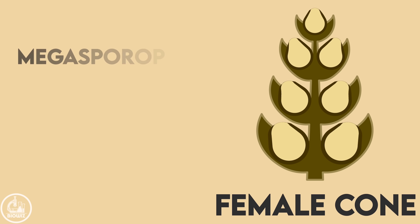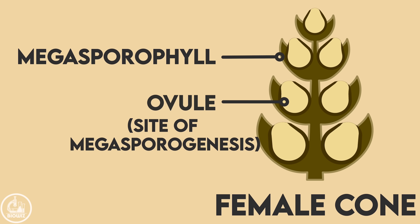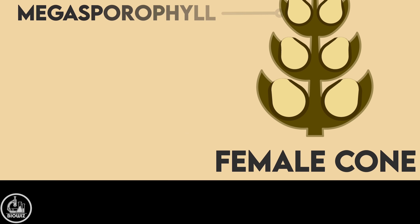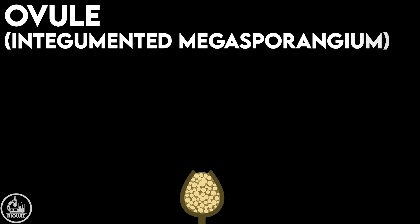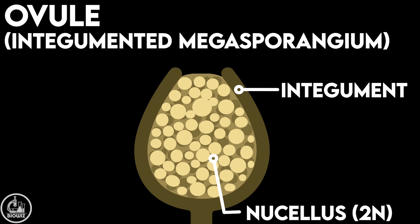Similarly, the female cones are made up of megasporophylls. The megasporophylls of the female cones are modified into ovules, which represent the site of formation of megaspores — that is, the megasporangium. The ovule consists of a protective envelope called the integument on the outer side, which encloses a tissue made up of diploid cells called the nucellus.